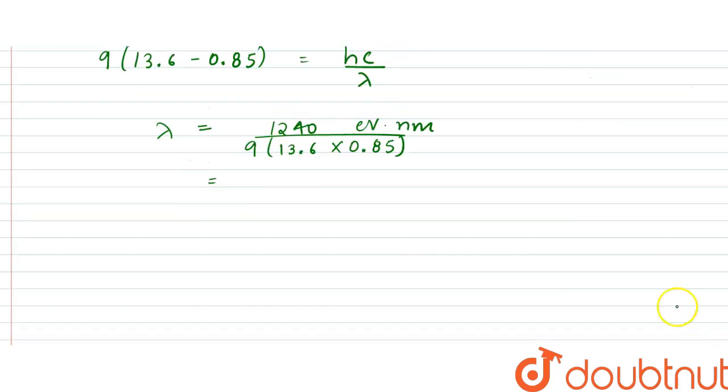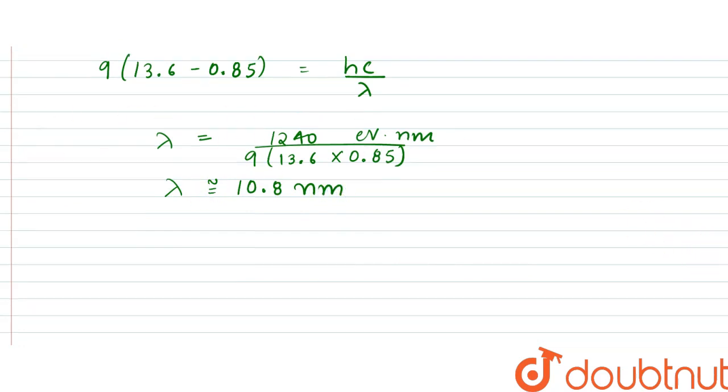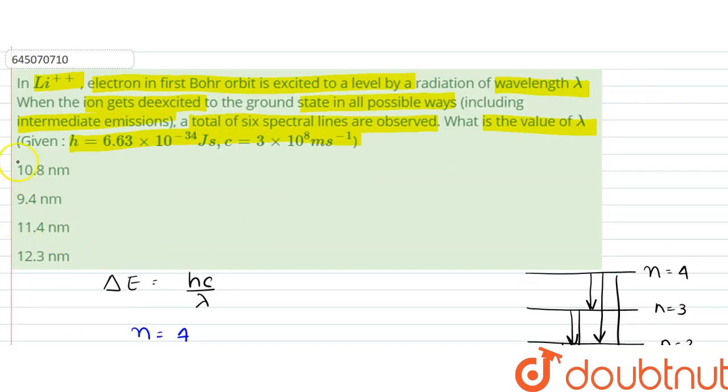So, we would get lambda in nanometers. So, when we calculate this value, lambda turns out to be approximately equal to 10.8 nanometers. So, our answer would be 10.8 nanometers, that is option A.